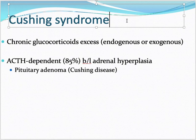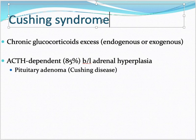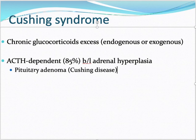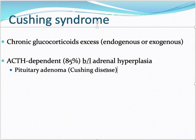This ACTH can come from a pituitary adenoma releasing excess ACTH — when that is the source, we call it Cushing disease specifically. Remember: Cushing syndrome refers to the collection of signs and symptoms from any cause of glucocorticoid excess; Cushing disease specifically means ACTH is coming from a pituitary adenoma. A patient on long-term steroids who develops these features has Cushing syndrome, not Cushing disease.